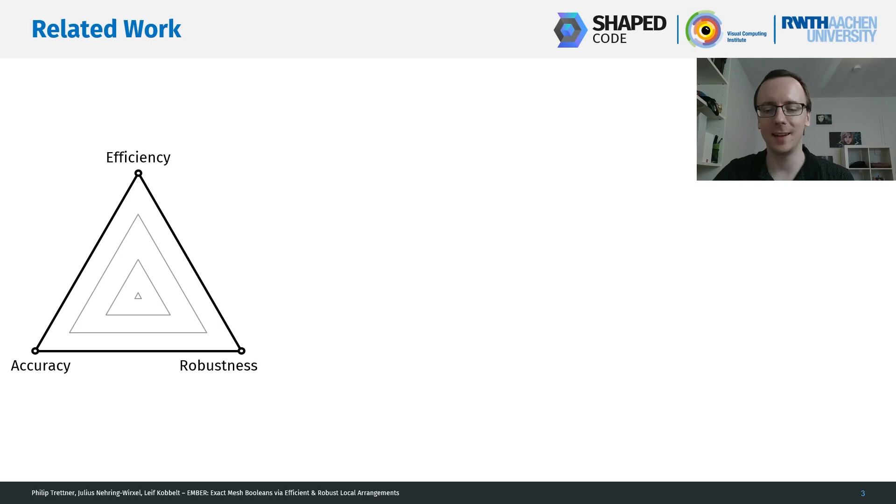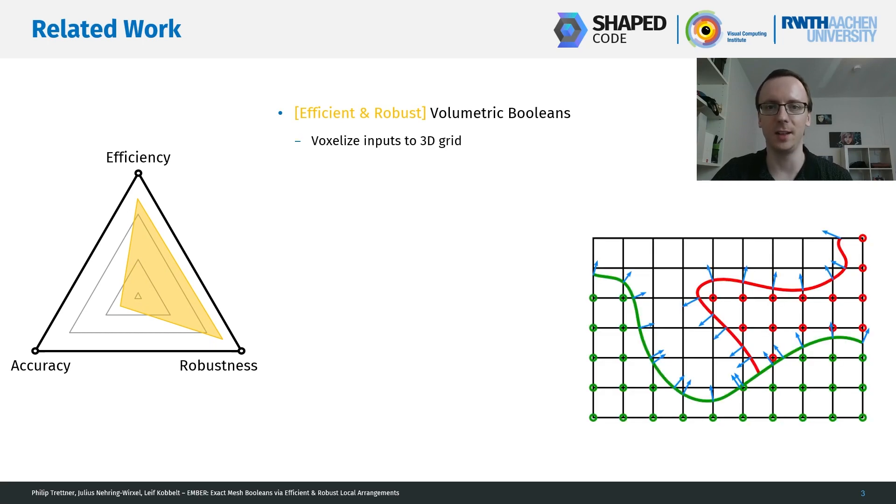Before we start, let's see what the state-of-the-art can already provide. First, we have volumetric booleans. They roughly work by voxelizing the input geometry to a 3D grid, then apply the boolean operation per cell, and finally they extract the resulting surface using an isosurface extraction algorithm.